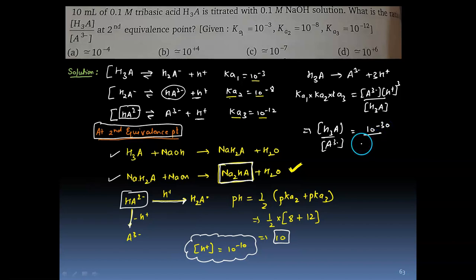I can safely assume H3A as 0.1 because even the first dissociation constant is very small. And multiplication of Ka1 into Ka2 into Ka3, that will be 10⁻²³.